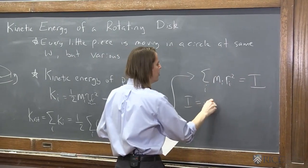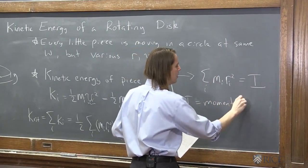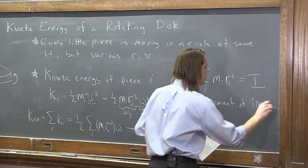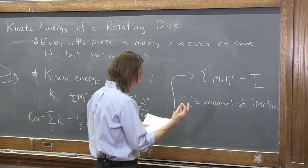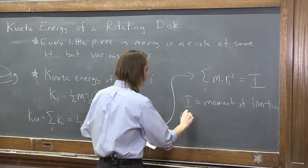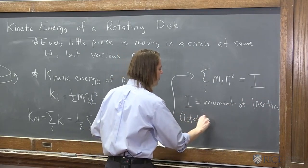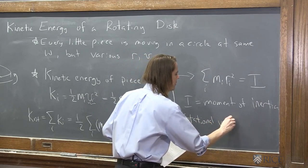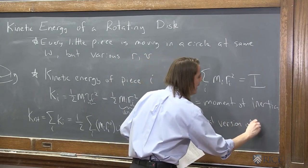So this thing, the sum i of m_i r_i squared equals what we call I. So I is the moment of inertia. And you could say it's sort of the, this is very, using language very loosely, okay?